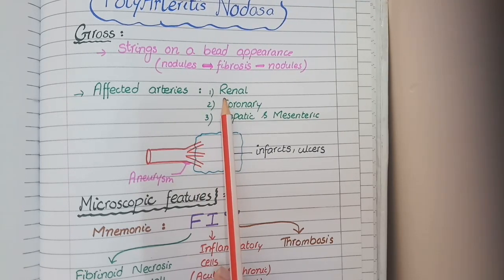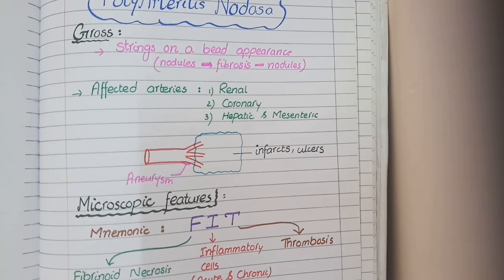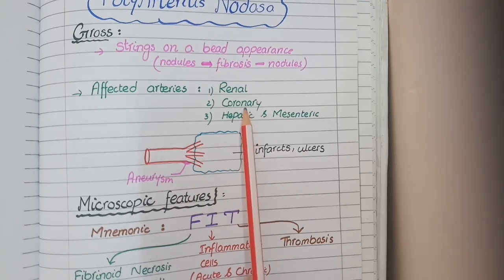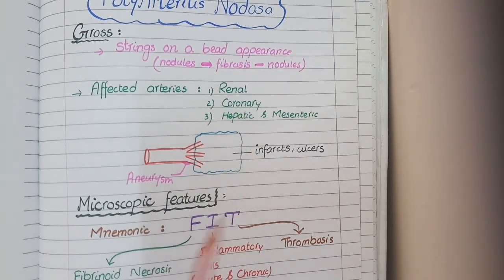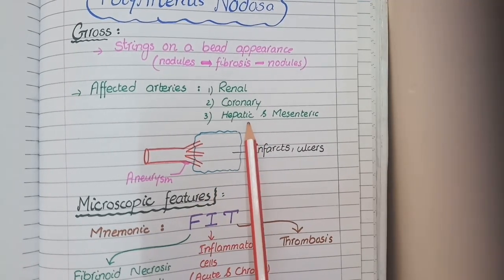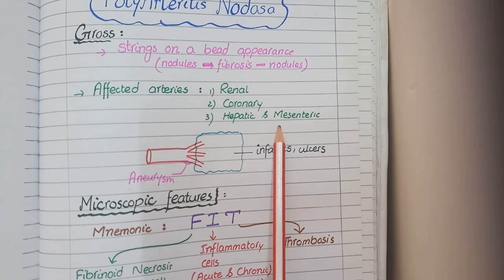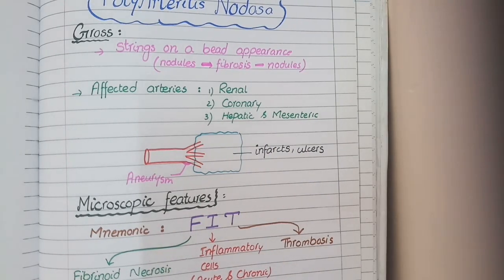The third line — 'who suffers from ischemic heart disease' — means that the second commonly involved arteries are the coronary arteries. The last line — 'cannot pass his stools with ease' — refers to involvement of the hepatic and mesenteric arteries supplying the gut, which produces symptoms of pain during peristalsis.